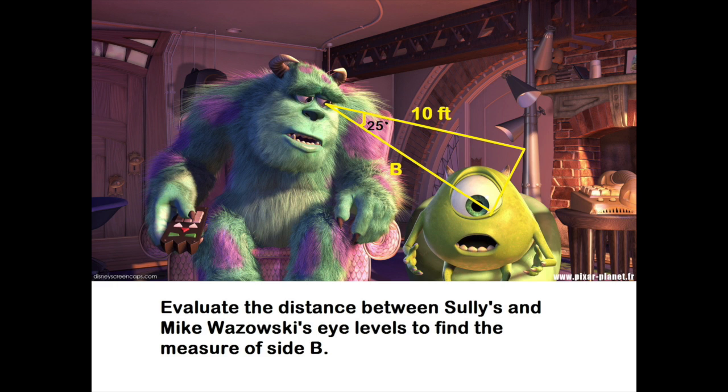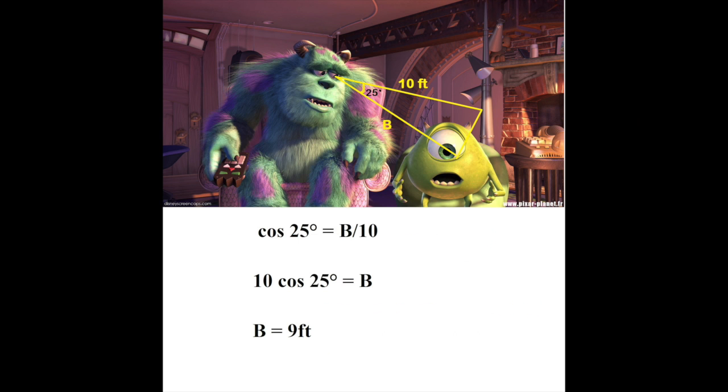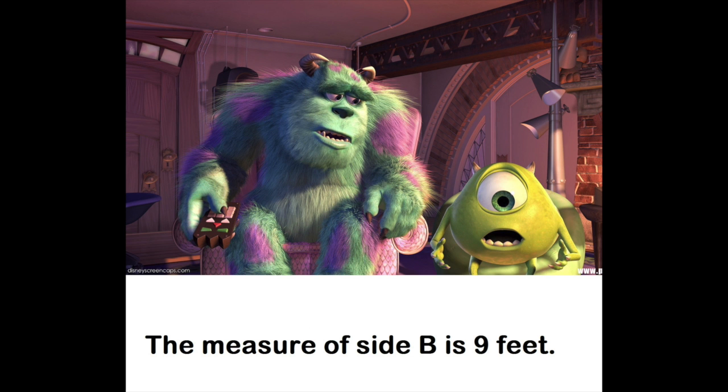Estimate the distance between Sully and Mike Wazowski's eye level to find the measure of side B. Well, first when looking at the triangle, you have a hypotenuse of 10 feet and an angle of 25 degrees, and we have to find side B. So from what we know, we will have to use sine, cosine, or tangent. For this problem, cosine would make more sense using because it's adjacent over hypotenuse. So you would write cosine 25 degrees = B/10, and from this point, you want to solve for B. So you multiply 10 to both sides and end up with 10 cosine 25 degrees. Then you plug it into your calculator and make sure it's in degree mode. So the distance between Sully and Mike Wazowski's eye level is 9 feet.